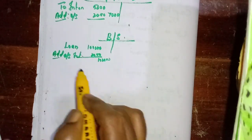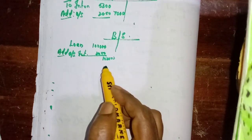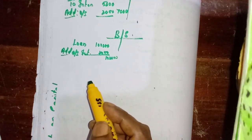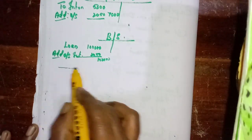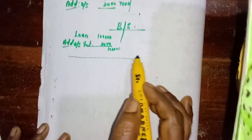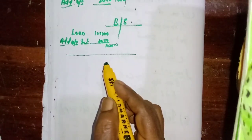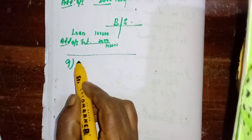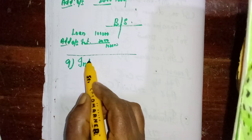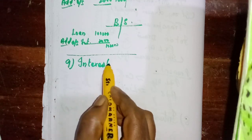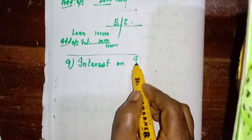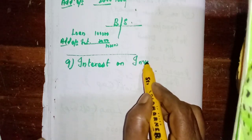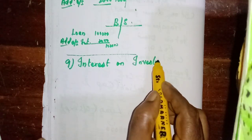Interest on loan is over. Now in the same way, sometimes the business organization may invest some amount outside the organization. For that investment, we will receive interest — that is called interest on investment. Interest on loan is an expense, but this interest on investment is an income.